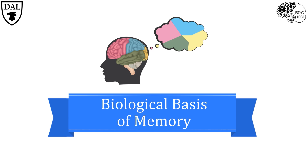We have many different types of memory and in turn many different brain areas that are involved in working together to allow us to interact and remember skills, events, our environment, and so on. Let's take a closer look at some of the areas of the brain associated with memory. As we will soon see, memory involves many areas of the brain working together.